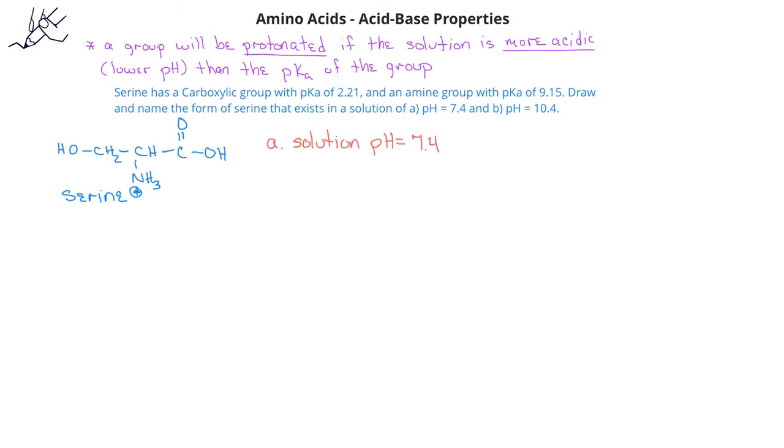we see that the solution pH 7.4 is greater than the pKa of the carboxylate group, 2.21, but it's less than the pKa of the amine group 9.15.